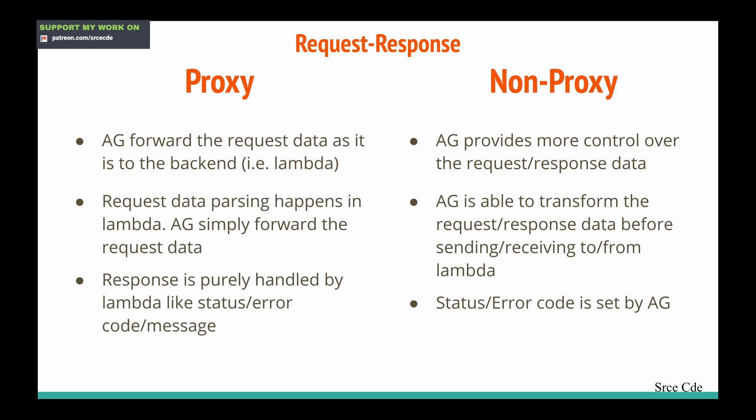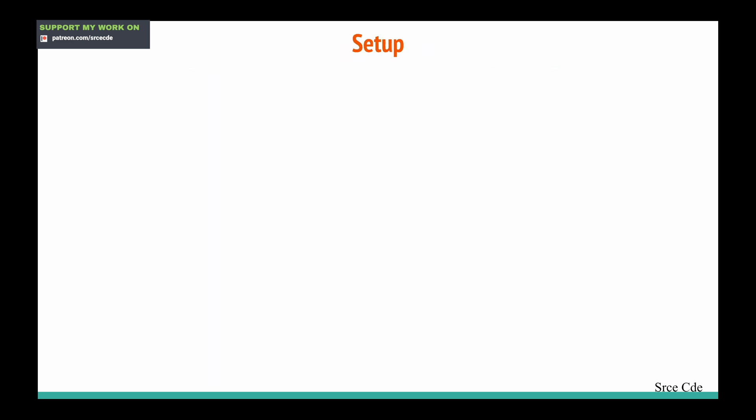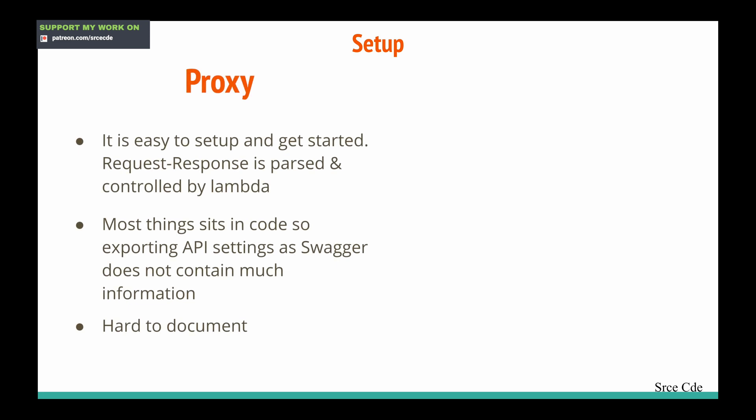To transform data we need to configure mapping templates. Now let's look at how proxy and non-proxy integration differ in terms of setup. Proxy integration is really easy to set up: request and response are parsed and controlled by the backend. We don't need to perform any complex configuration at the API Gateway level — all we need to do is create the resource and method, check the 'use proxy integration' box, have the Lambda function in the backend, and you're good to go. Most of the things sit in the code, so exporting API settings as Swagger does not contain much information.